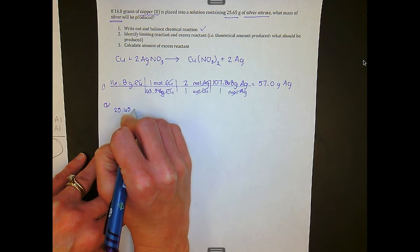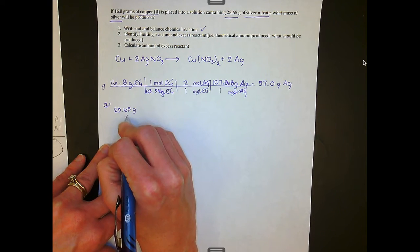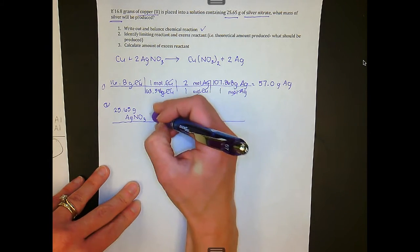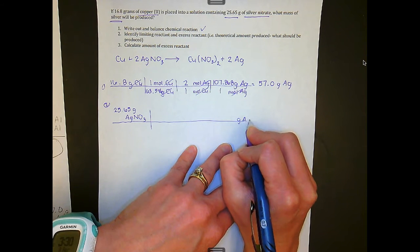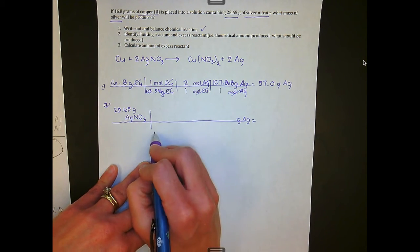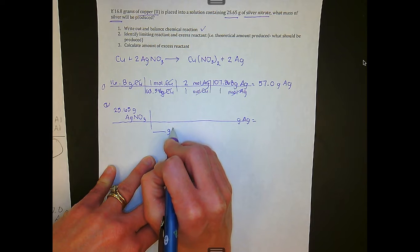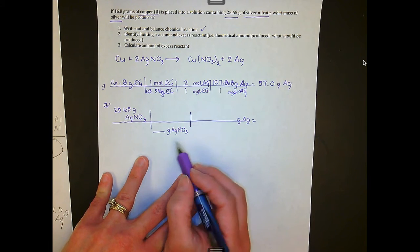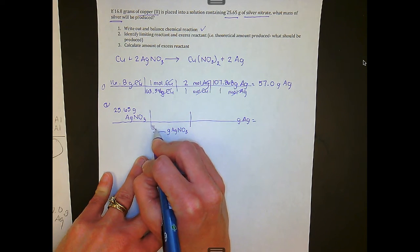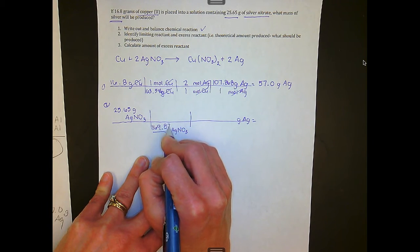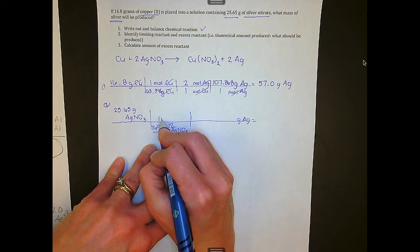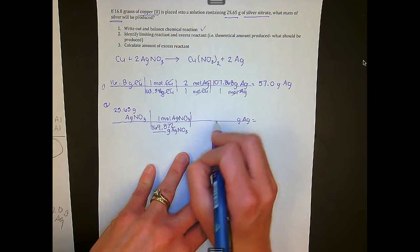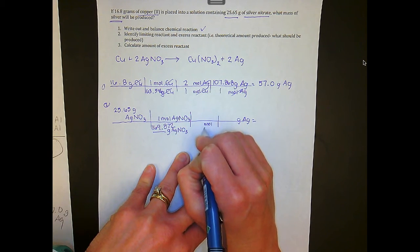We draw our T-chart again. We're trying to get to grams of silver and we follow the same path. Drop grams of silver nitrate down — anytime we're looking for a mass we need the molar mass. The molar mass of silver nitrate is 169.872, and we know that represents one mole of silver nitrate. We continue dropping units down to moles of silver nitrate.